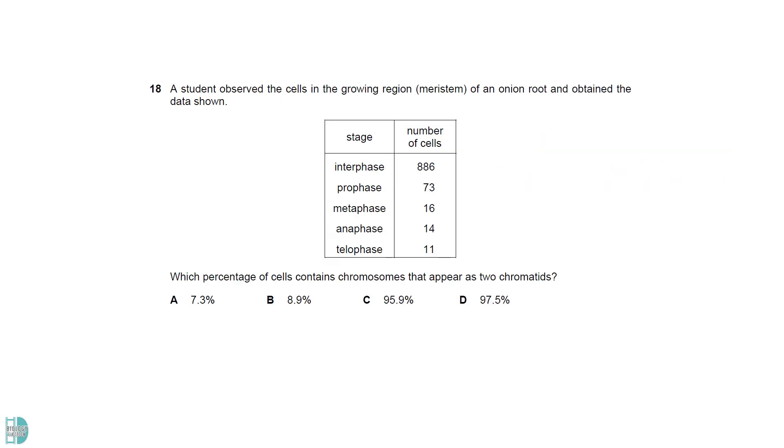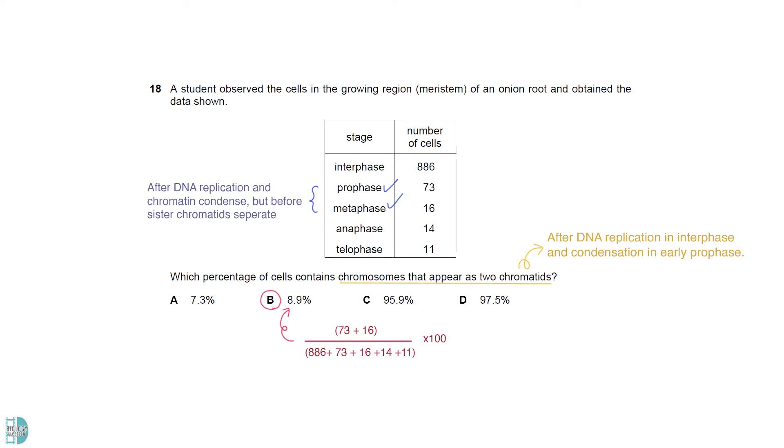Chromosomes appear as two chromatids after the DNA replication in interphase and condensation in early prophase. So this appearance can be seen in prophase and metaphase, before the chromatids separate in anaphase. The percentage is the cell number in prophase and metaphase, divided by the total number of cells, then multiplied by 100. The answer is B.